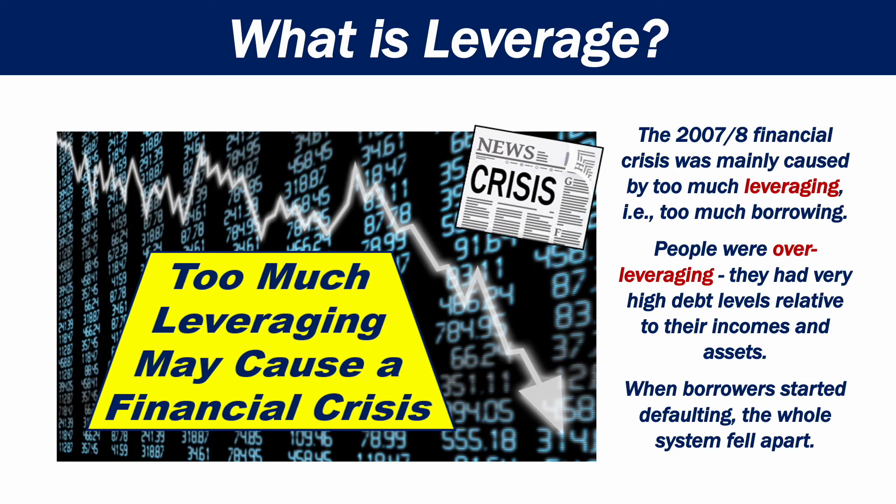People were over-leveraging; they had very high debt levels relative to their incomes and assets. When borrowers started defaulting, the whole system fell apart.